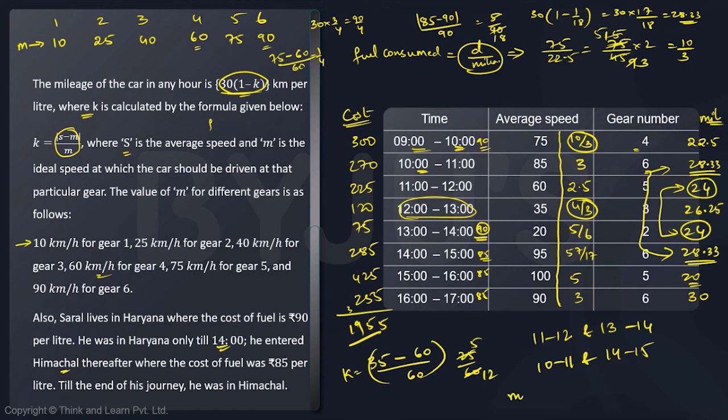My mileage will be 30 × (1 - 5/12), which is 30 × 7/12. This is 70 by 4 or 35 by 2. My mileage is 35/2. So fuel consumed in this one hour is distance 35 divided by 35/2, which is 2 liters. 4/3 liters I was consuming, now I will consume 2 liters total.